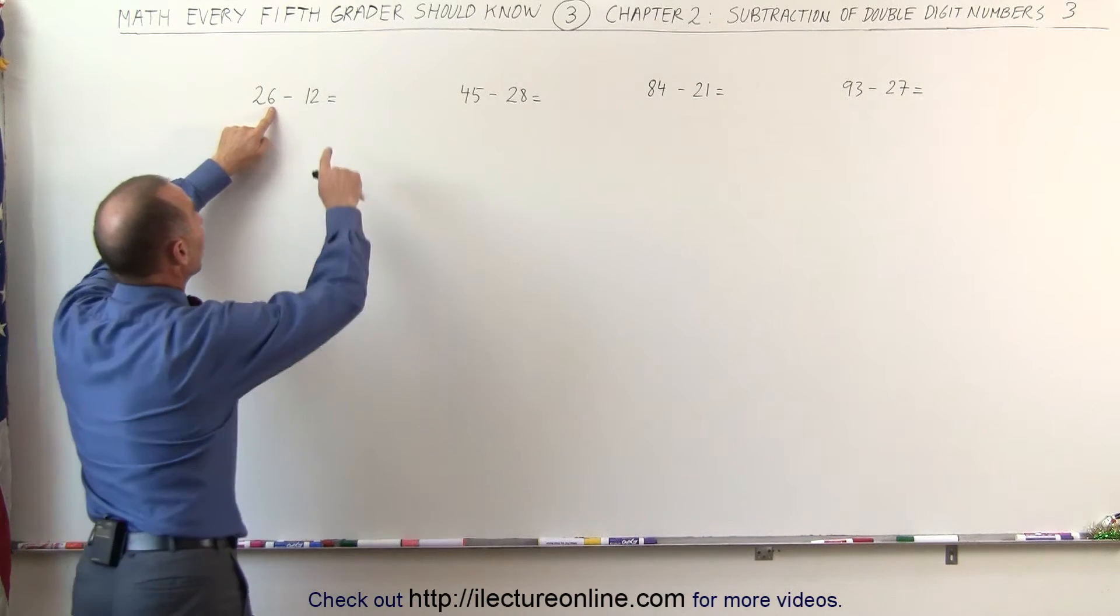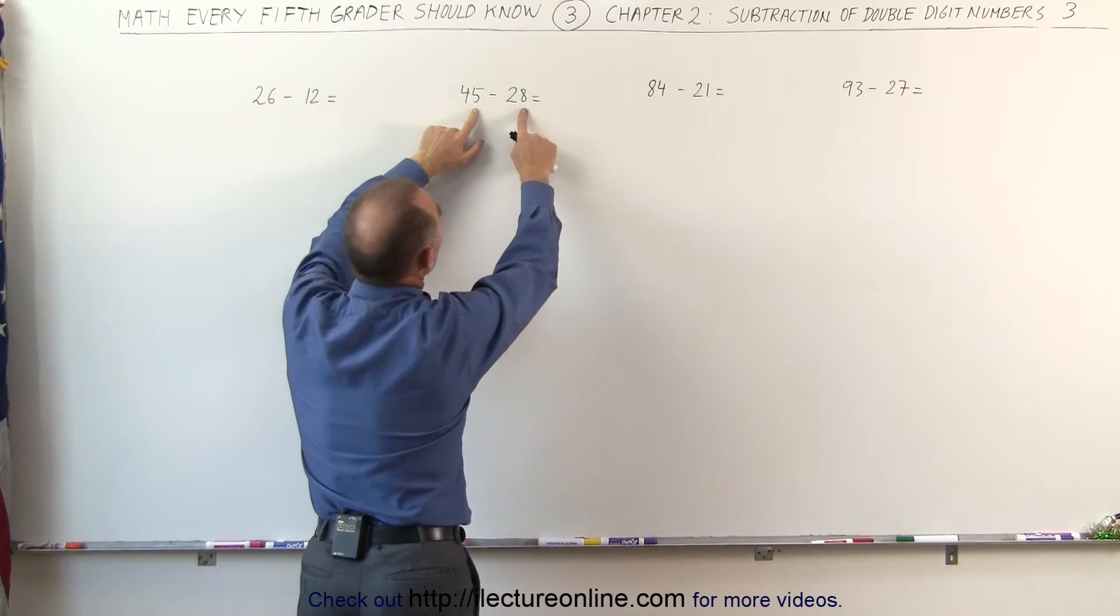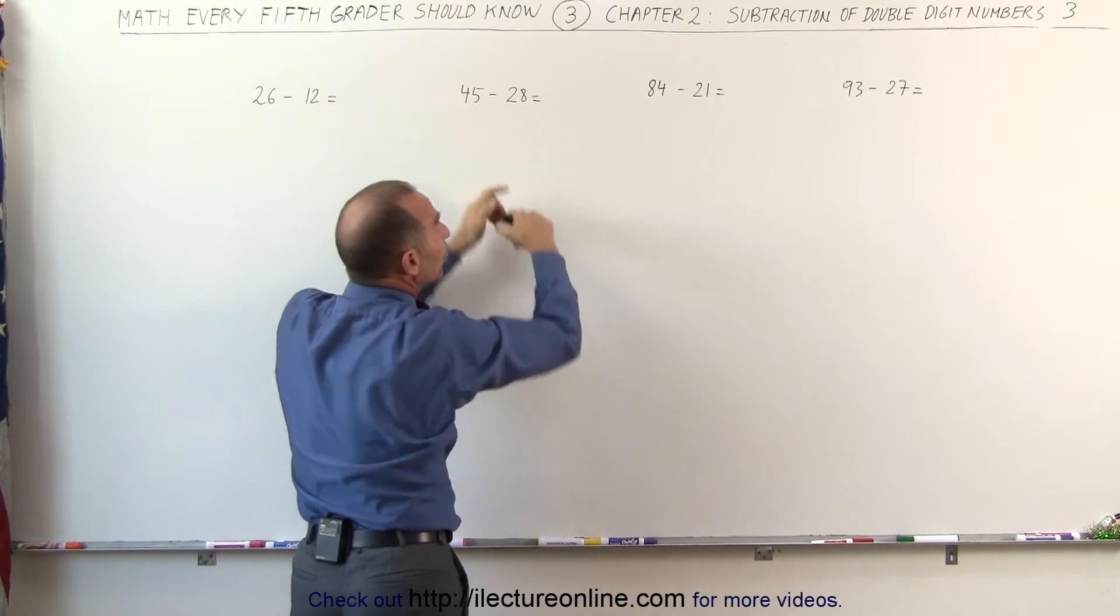Always look at the last two numbers and notice if this number is smaller than that, then you do it one way. But if you look at these two numbers, notice that this number is bigger than this and you do it a different way.